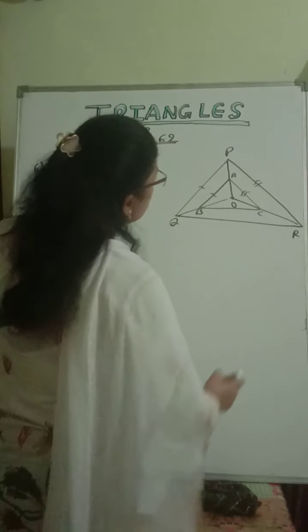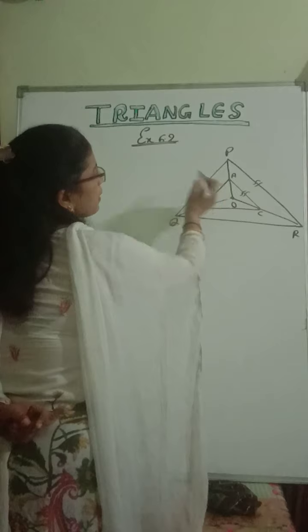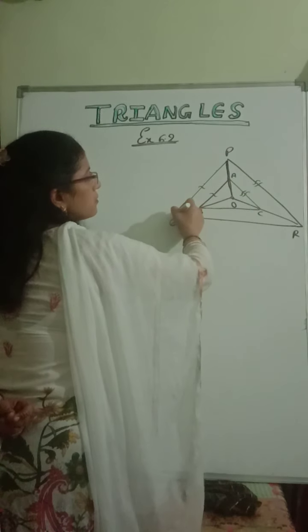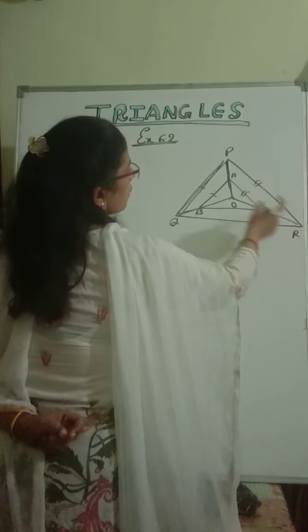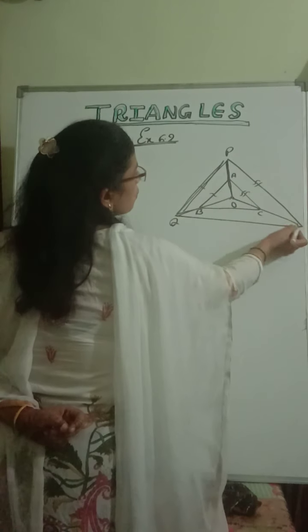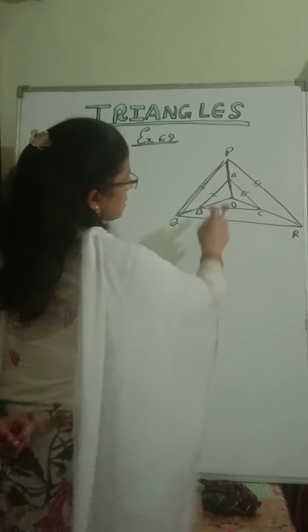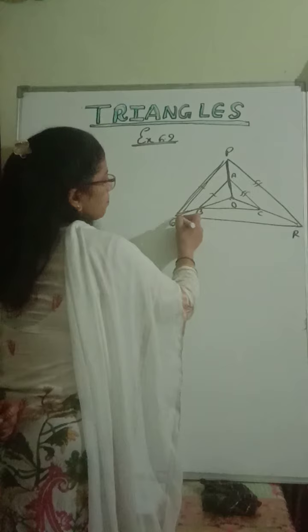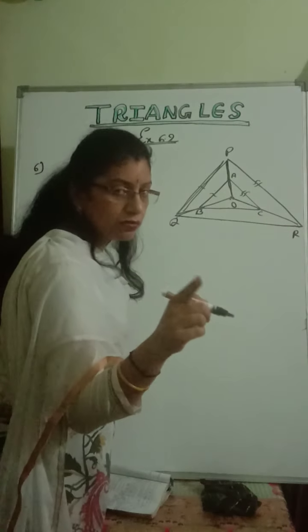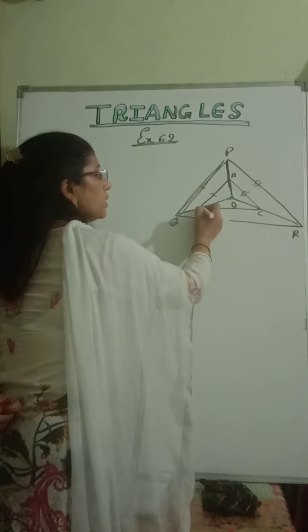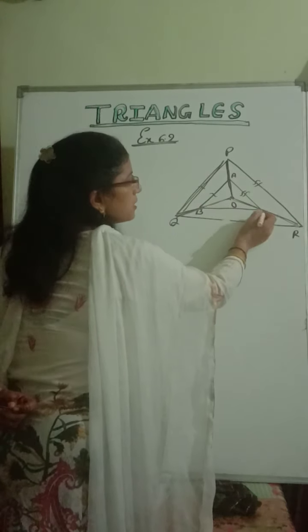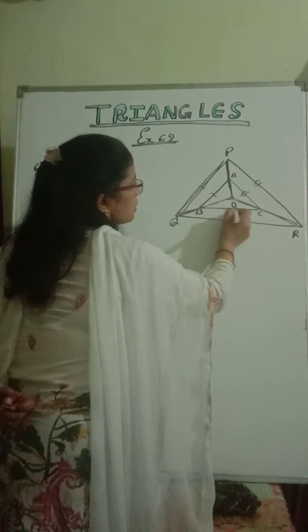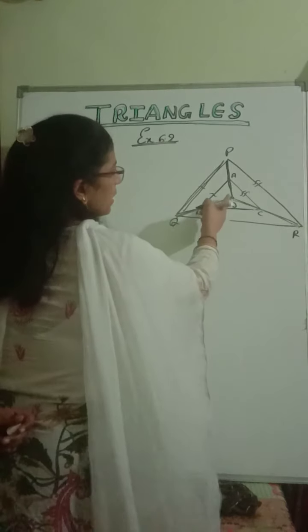So what is given to you? You are given that this side is parallel to this side. If AB is parallel to PQ, then in triangle OPQ, the ratio OB upon BQ equals OA upon AP. Similarly, if AC is parallel to PR, then OA upon AP equals OC upon CR. From these two, we get OB upon BQ equals OC upon CR. Since two sides are in the same ratio, therefore BC is parallel to QR. This is the proof by the converse of the basic proportionality theorem.